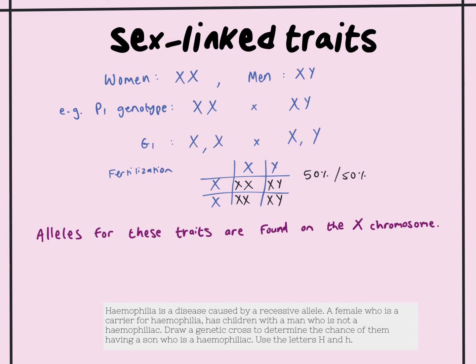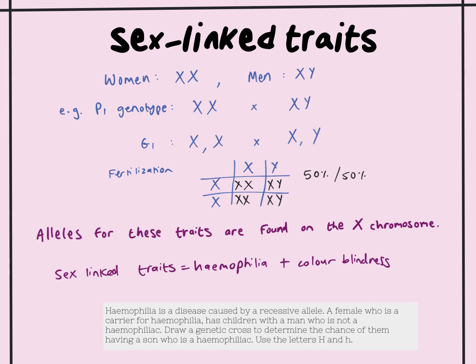The two sex-linked traits you need to know are hemophilia and colorblindness — you treat them both in exactly the same way. If another sex-linked trait is given in an exam question, the question will tell you that it is sex-linked. But hemophilia and colorblindness are both sex-linked, meaning their alleles are found on the X chromosome, which we represent as superscript.